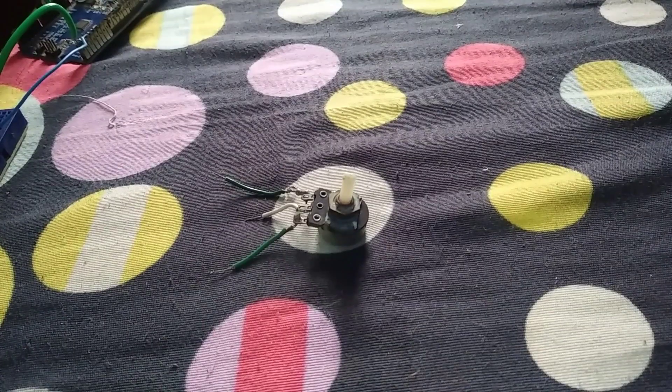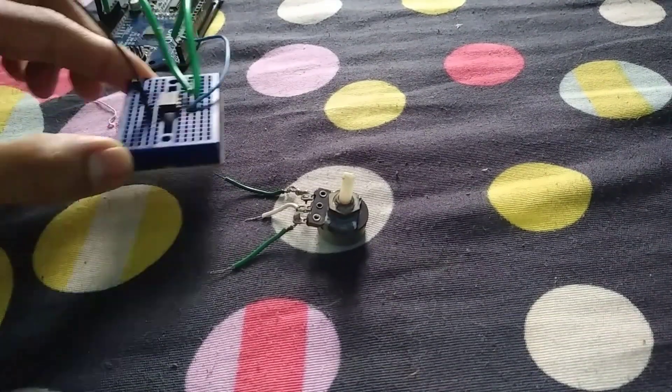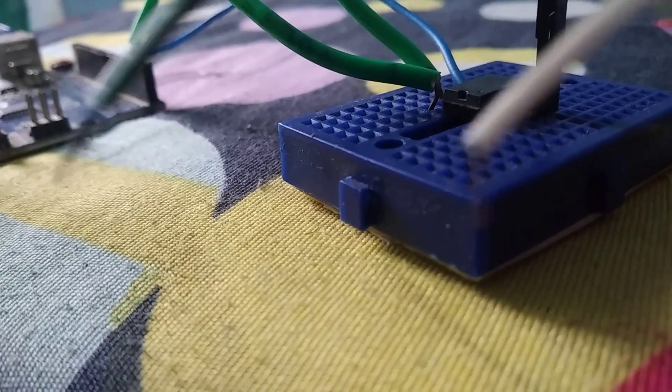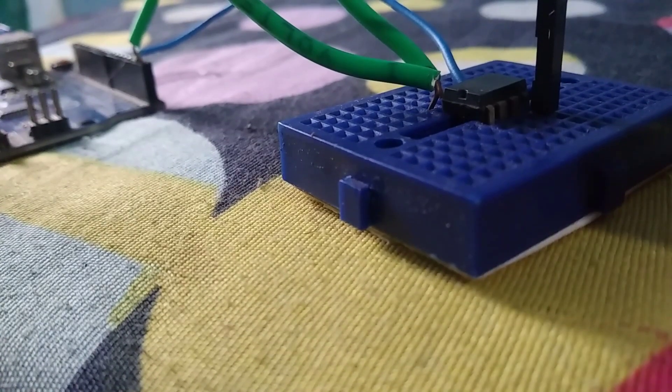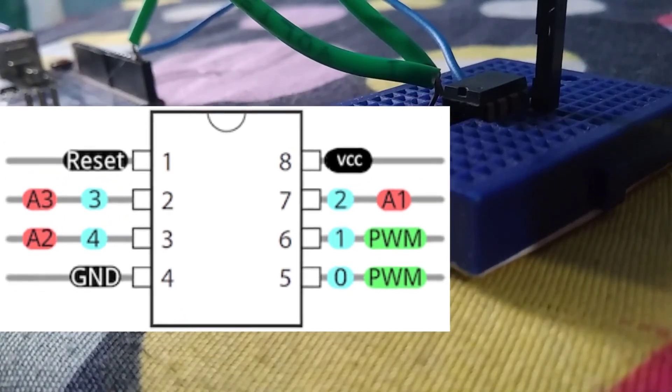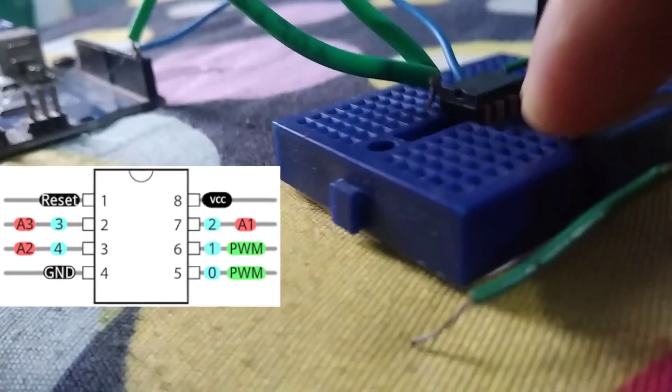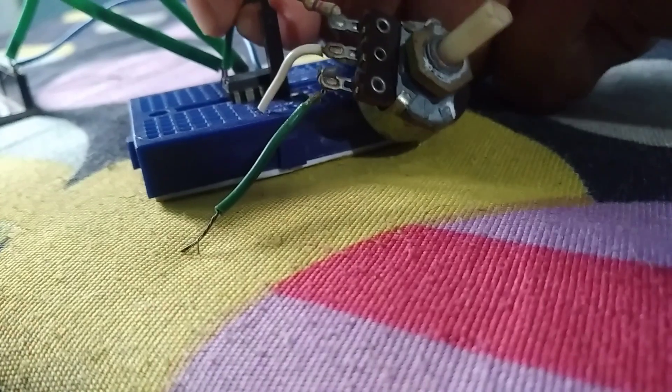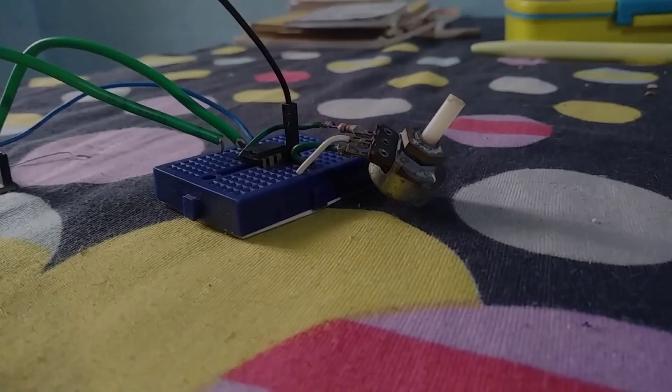Let's connect the potentiometer to the setup. So I'm gonna connect the signal pin to A3 of ATtiny85 or digital pin 3. This goes to the VCC right here. And this pin goes to the ground. Now everything is connected.